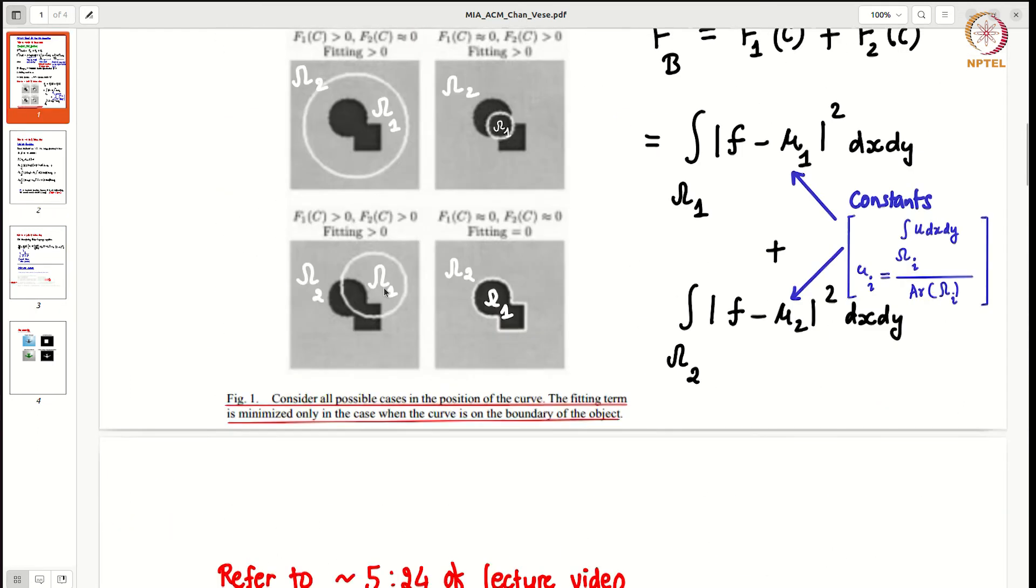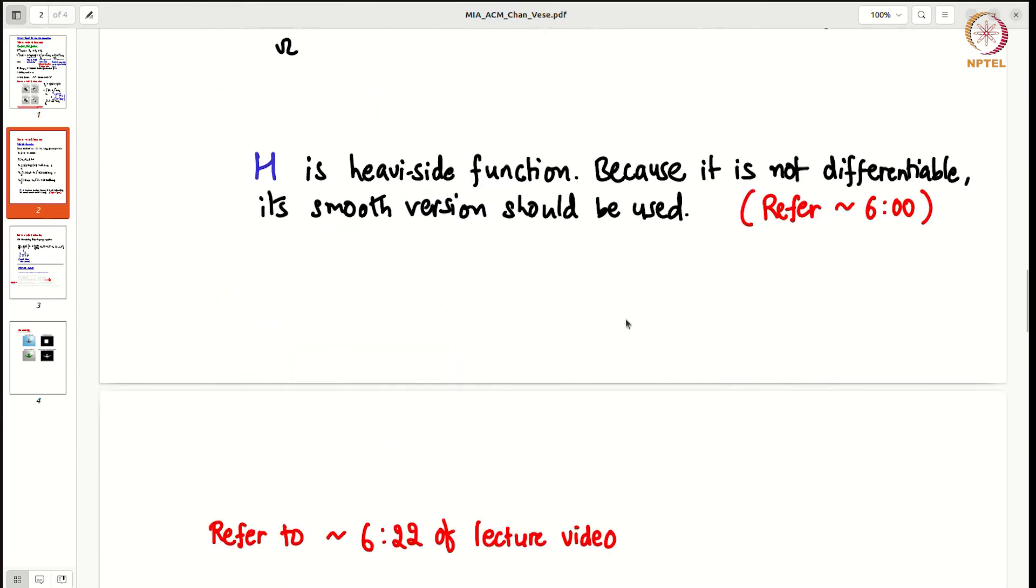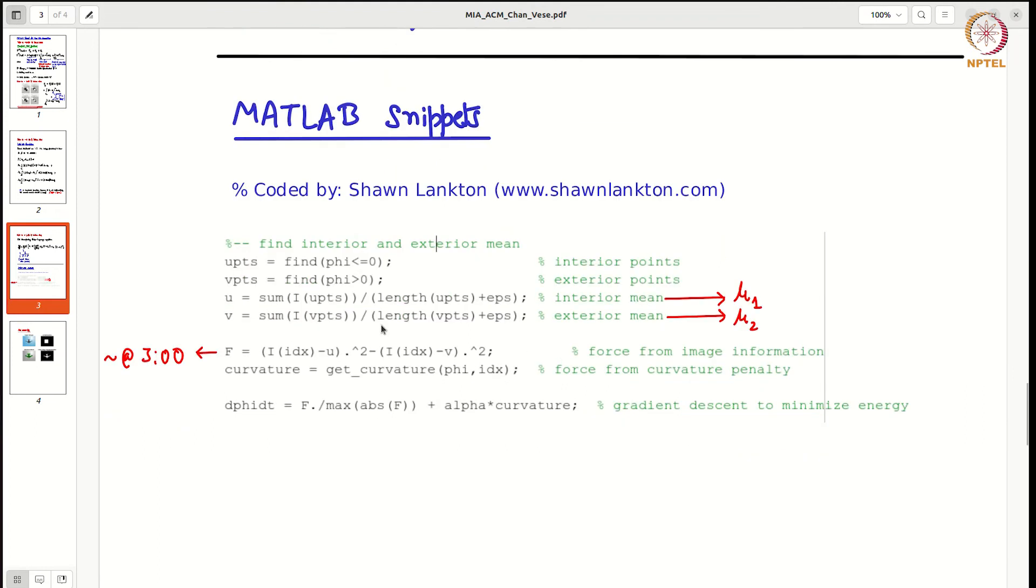For example in this snippet you can see first is identifying omega 1 and omega 2. With the help of phi, first they found the points within omega 1, these are the interior points, then the exterior points, points in omega 2. Then we find the value of means, so this is mu 1, this is mu 2. And then we calculate this force: i minus u squared, i minus v squared. So this is one penalty.